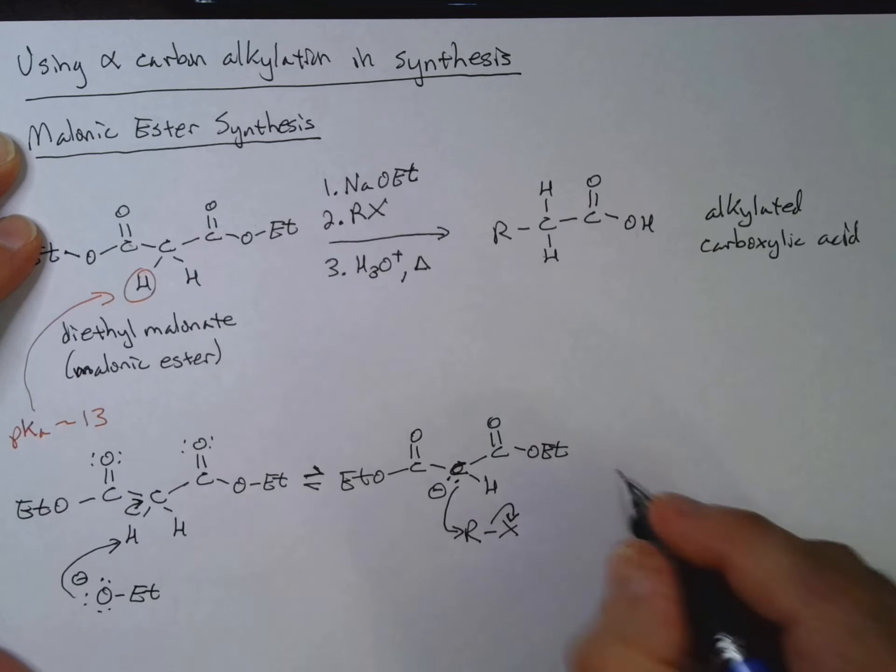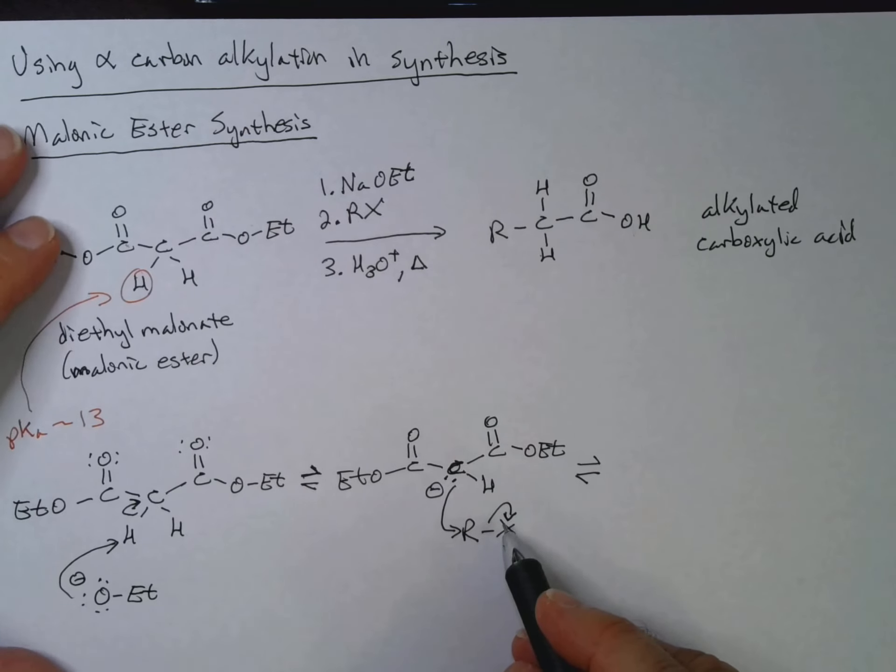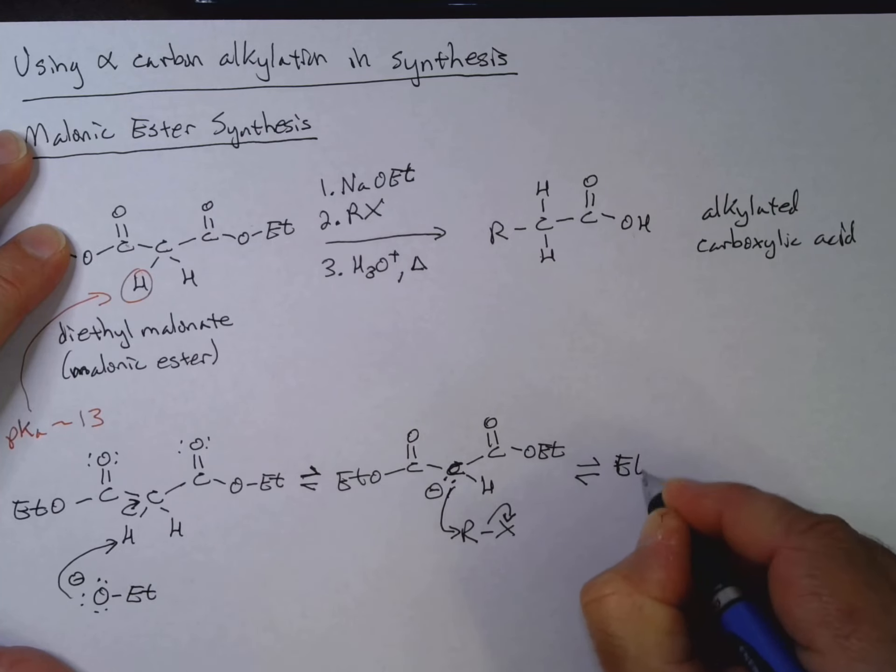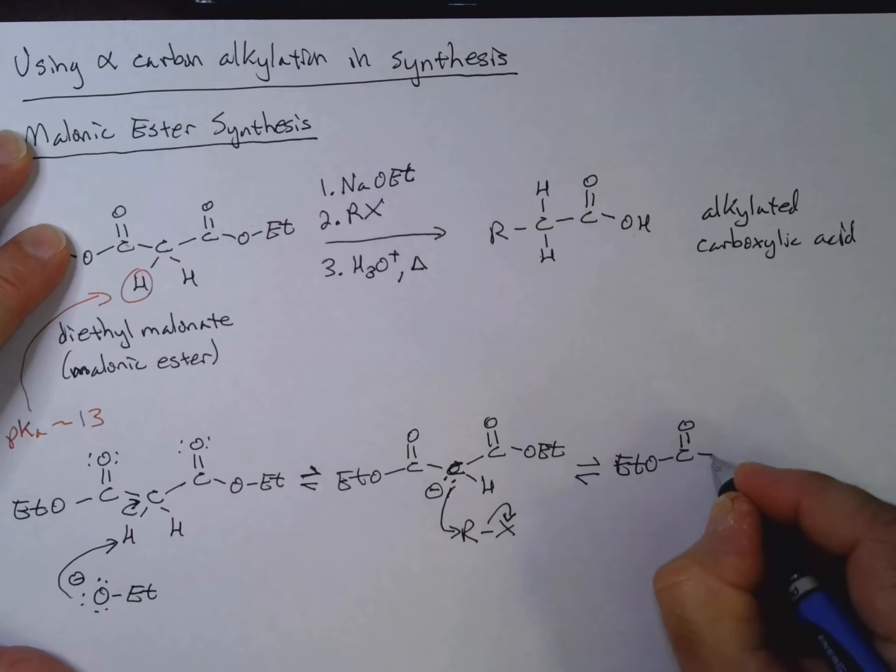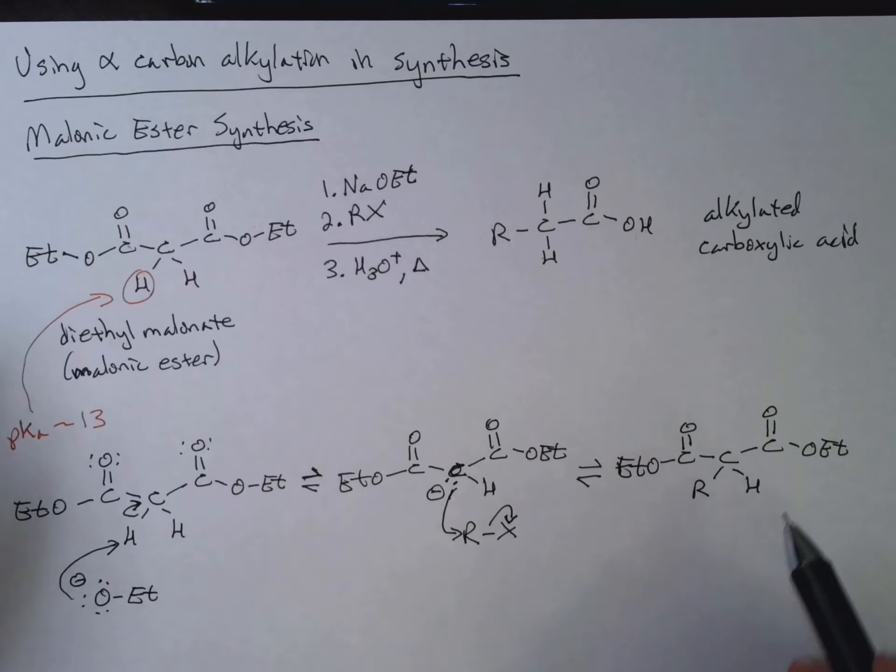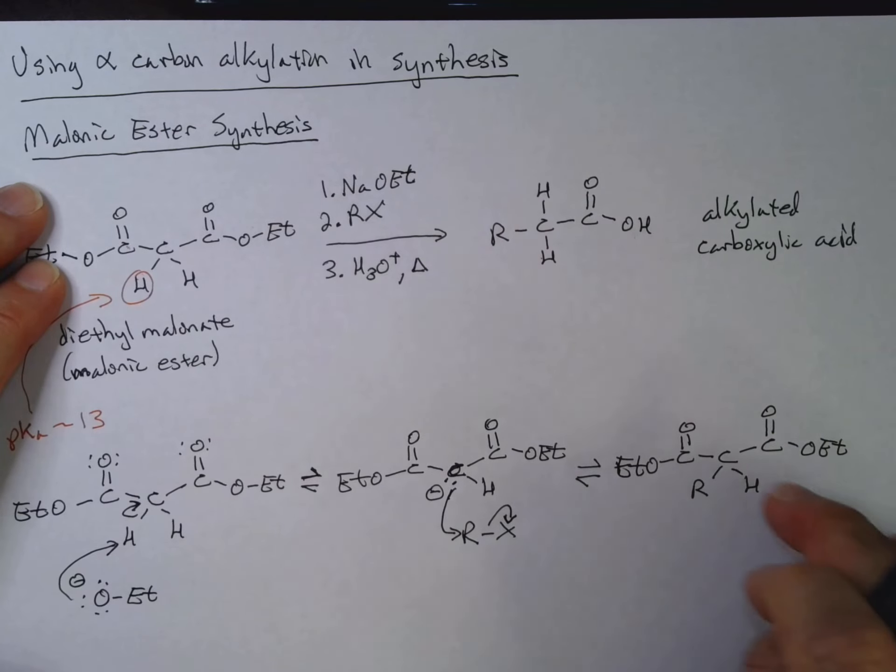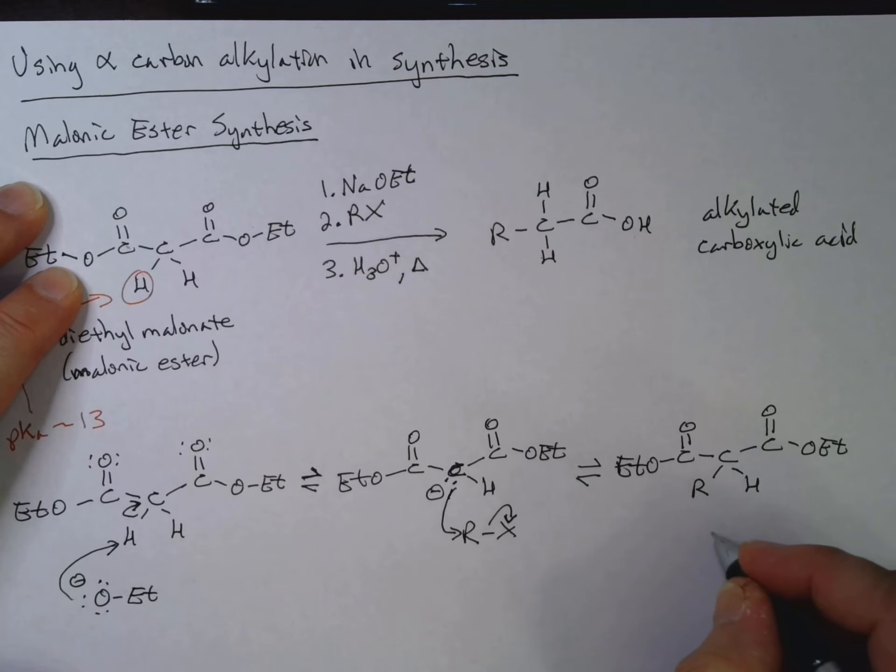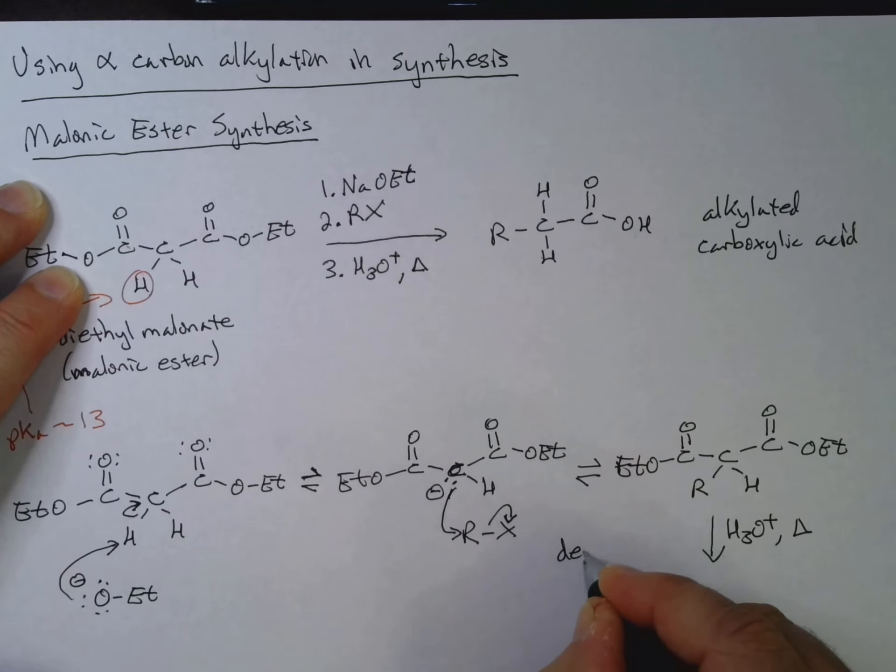And that will give me now Et-O-C double bond O-C-R-H-C double bond O-O-Et. Now I can repeat this if I want to. So I could do that again and get a second one. I could do a different alkyl group, R-prime. And then when I go ahead and use acid and heat, I get a decarboxylation.